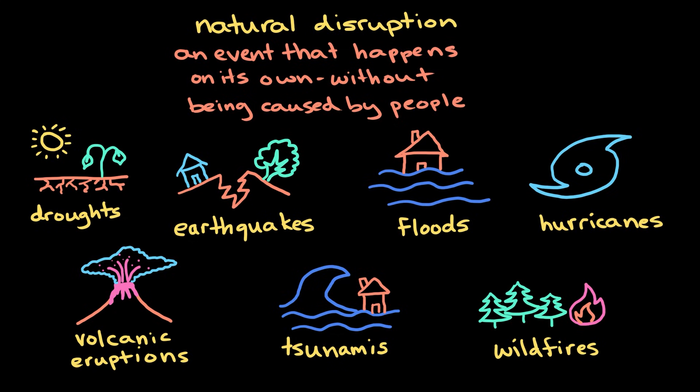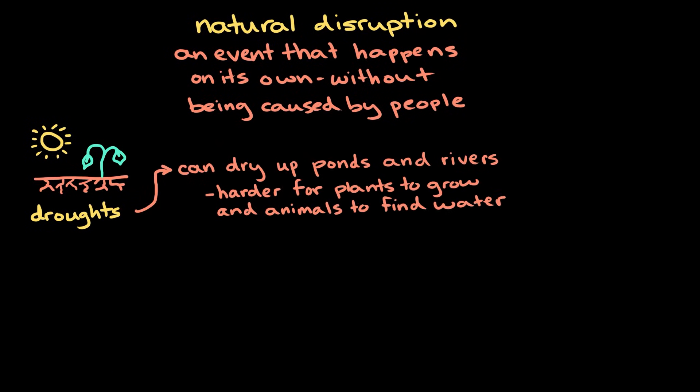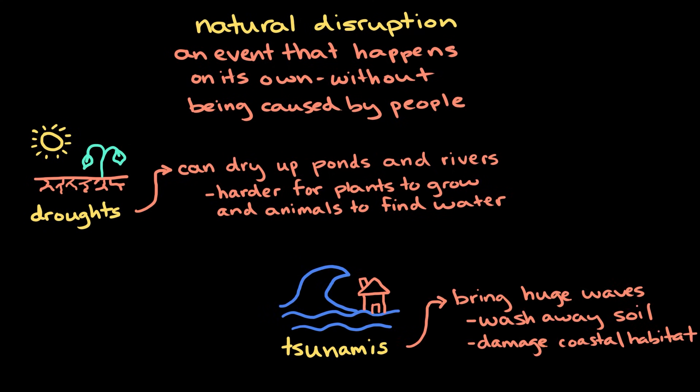Unless we cause them, of course. These events can change ecosystems in lots of different ways. For example, droughts can dry up ponds and rivers, making it harder for plants to grow and animals to find water. Tsunamis bring huge waves that wash away soil and damage coastal habitats.